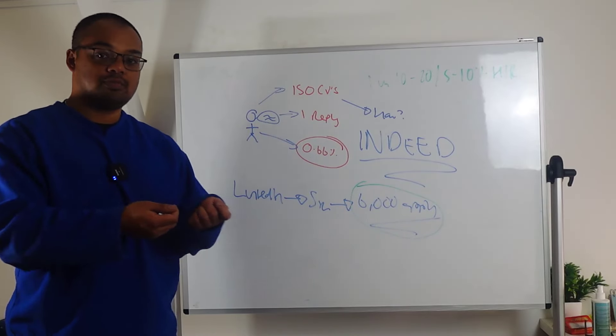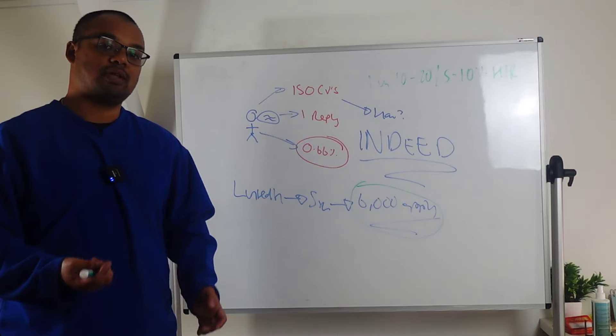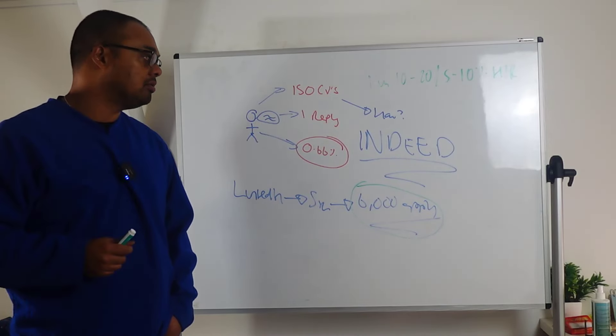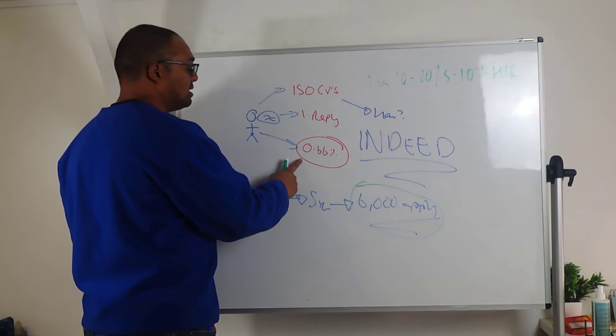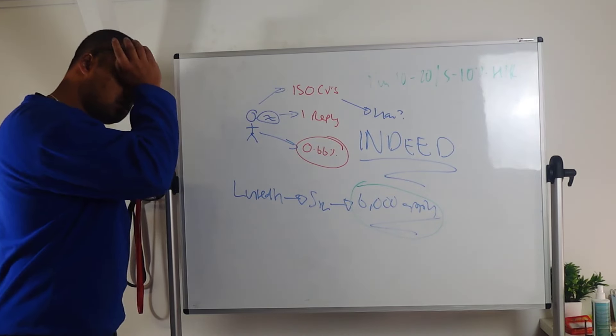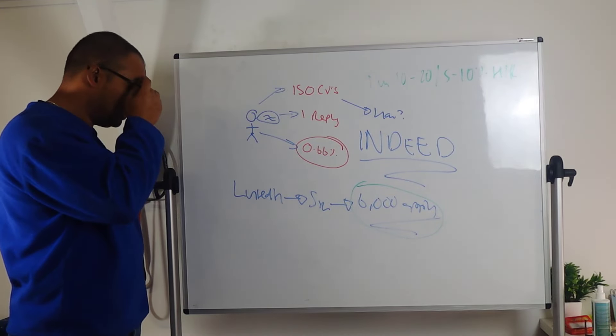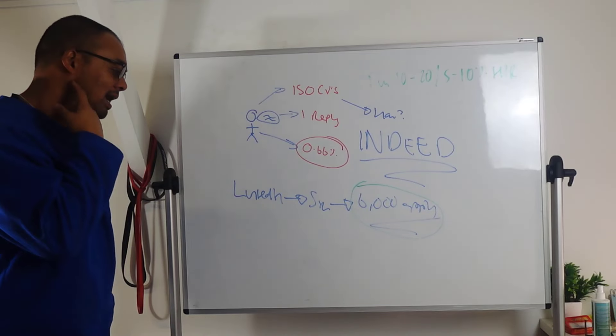You've got 6,000 people submitting a piece of paper digitally. How are you going to stand out with that, right? So, this all of a sudden begins to make sense. Why he's got such a low response rate. Because he's applying for Indeed, he's applying for LinkedIn. So it's like, dude, what's your plan?